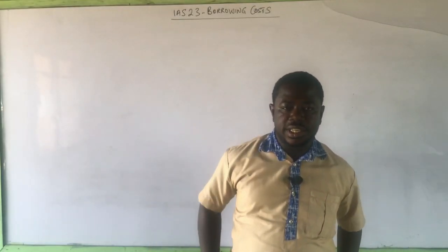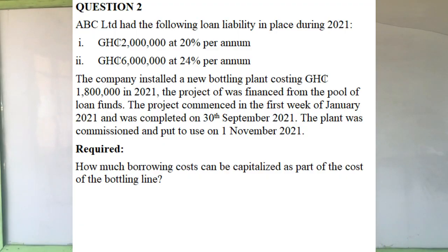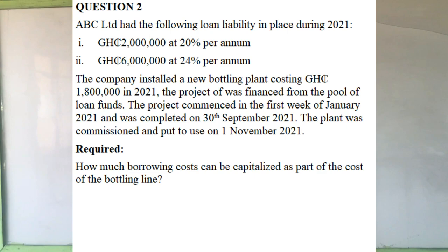Now let us take a question on general borrowings. ABC Limited had the following loan liabilities in place during 2021: 2 million Ghana cedis at 20% per annum and 6 million Ghana cedis at 24% per annum. These are the funds already in their capital structure with their corresponding interest rates. The company installed a new bottling plant costing 1.8 million Ghana cedis in 2021, the project of which was financed from the pool of loan funds. The project commenced in the first week of January 2021 and was completed on 30th September 2021.